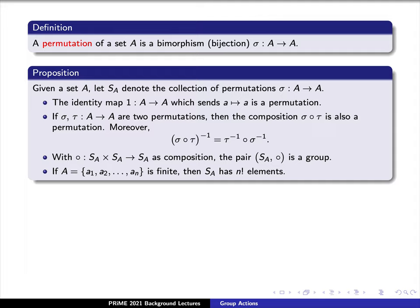Moreover, the inverse of sigma circle tau is tau inverse circle sigma inverse. With circle as the composition map, the pair S sub A along with circle is a group.